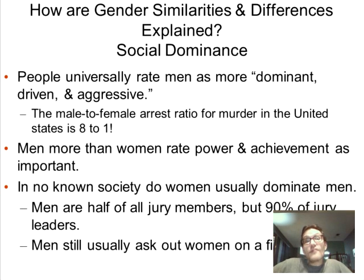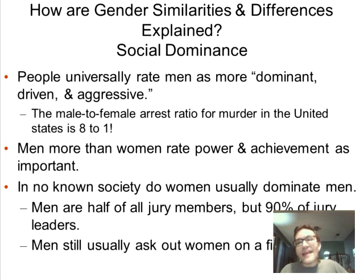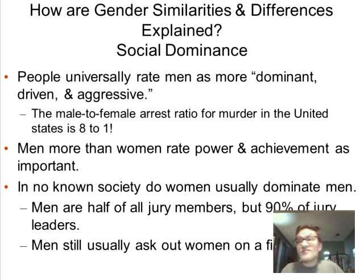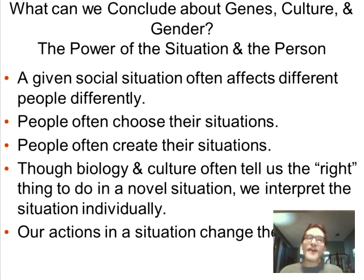All over the world, men are rated as more socially dominant. The male-to-female arrest ratio for murder is eight to one. Men more than women rate power and achievement as important. Men make up half of all jury members, but 90 percent of jury leaders — men just walk into a room and assume they're going to be in charge.